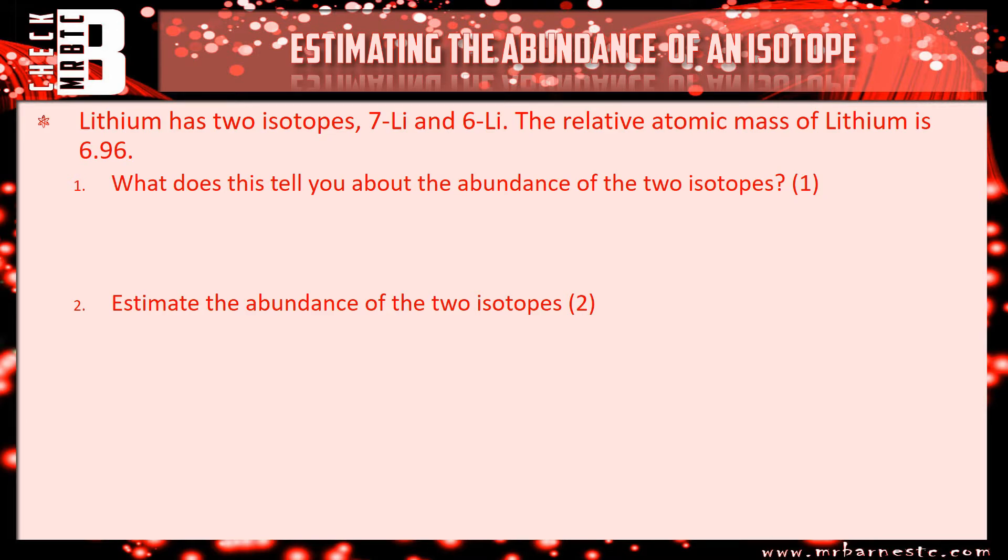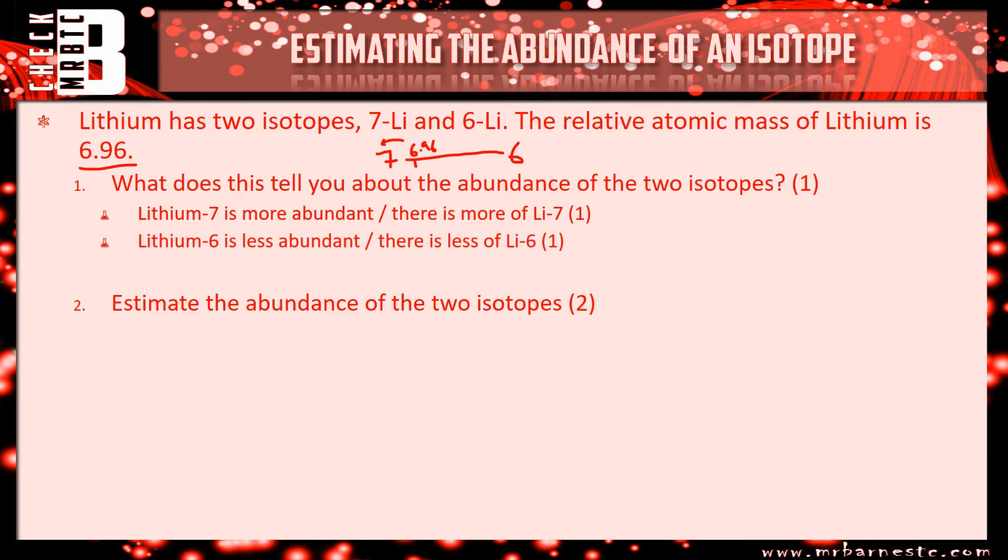Okay, let's go through. So question 1, what does this tell you about the abundance of the two isotopes? So if you've got 6.96, which one is it closest to? So remember, what I'd always say do, draw your line. You may have done it the wrong way around, but that doesn't matter. And put your relative atomic mass in, which is going to be around here, 6.96. Which one is it closest to? 7. So 7 is the most abundant. So you're going to get one mark for saying lithium is more abundant, or there is more of lithium 7. Or you could have said the reverse argument, lithium 6 is less abundant, or there is less of lithium 6.